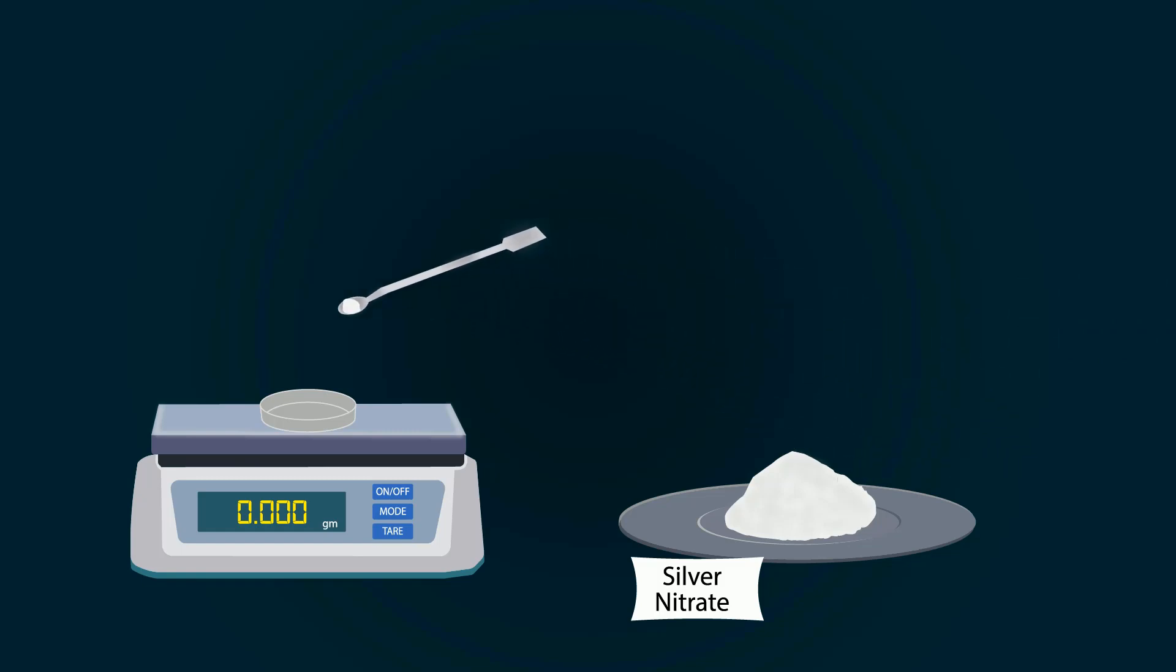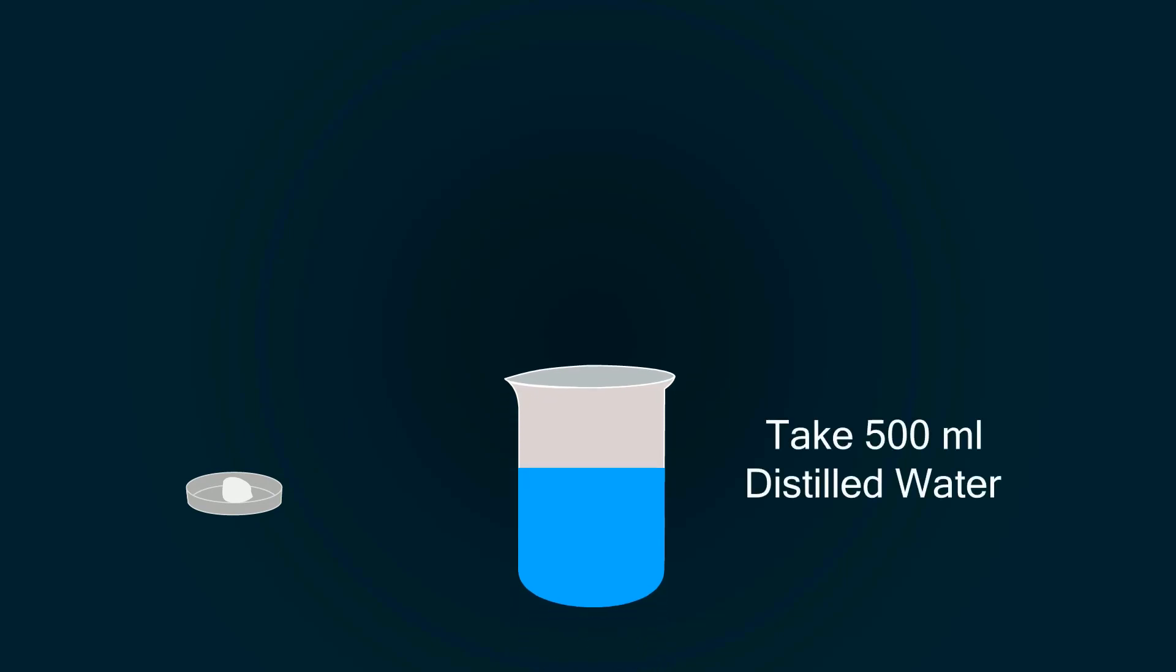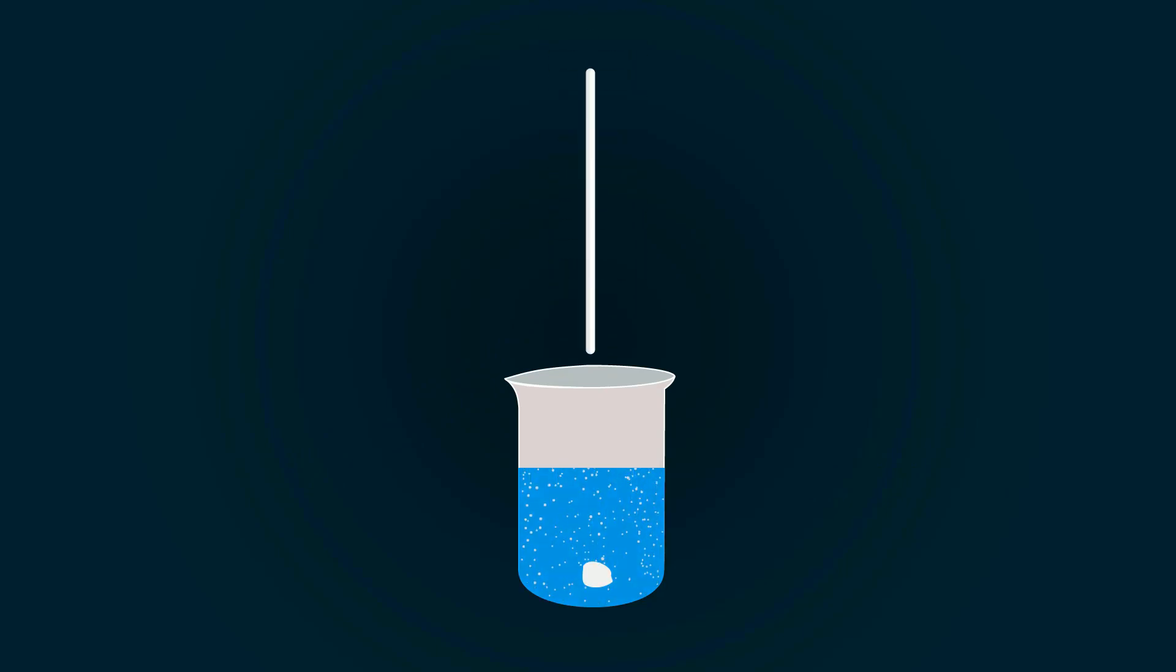Now take some distilled water in a beaker, up to 500 milliliters, and put the silver nitrate chemical into it. Start mixing it with the help of a spatula to make a homogeneous mixture.